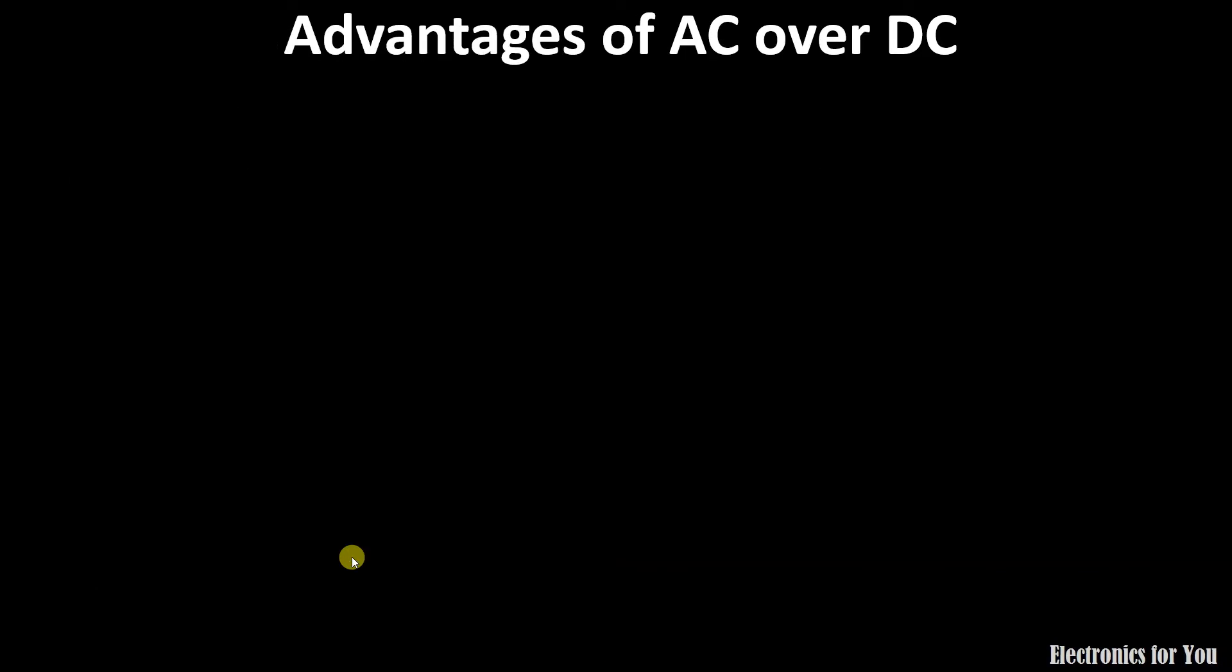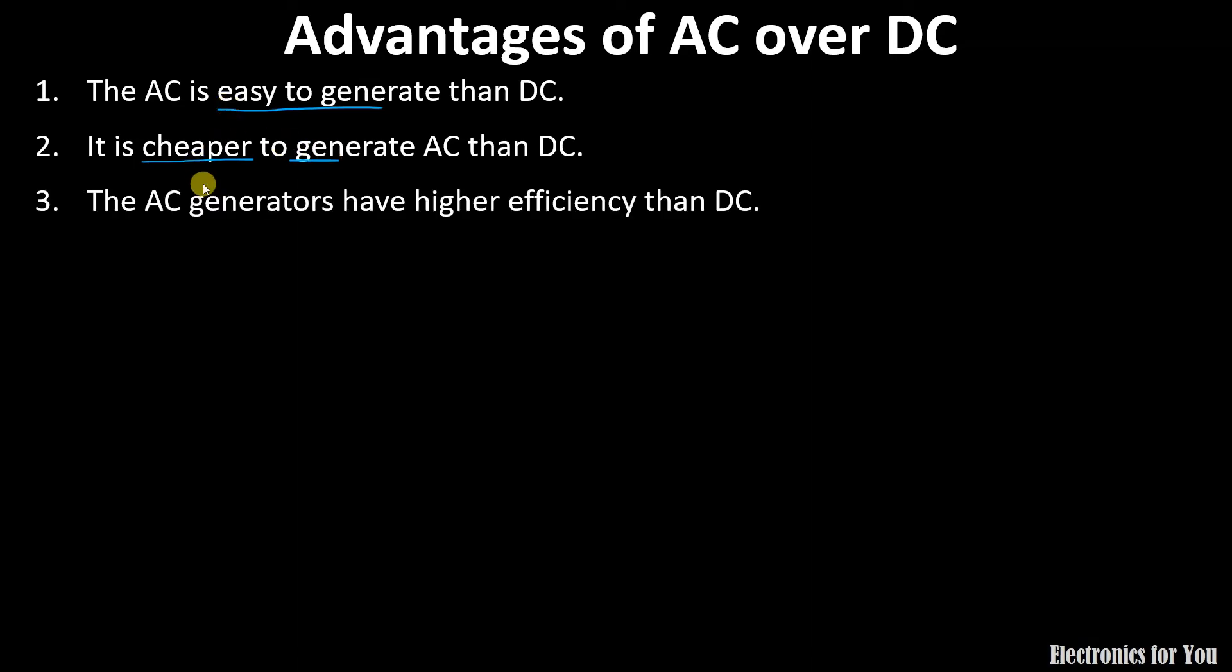Now, let us move to the second topic that is the advantages of AC over DC because we generally prefer AC over DC. The first advantage is AC is easy to generate than DC. The second is it is cheaper to generate. It is easy to generate as well as cheaper than DC.